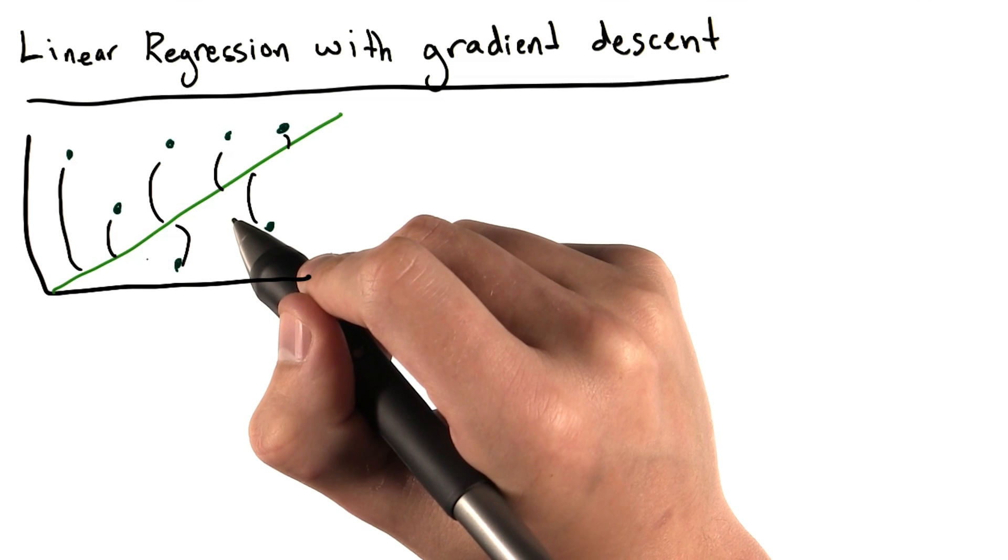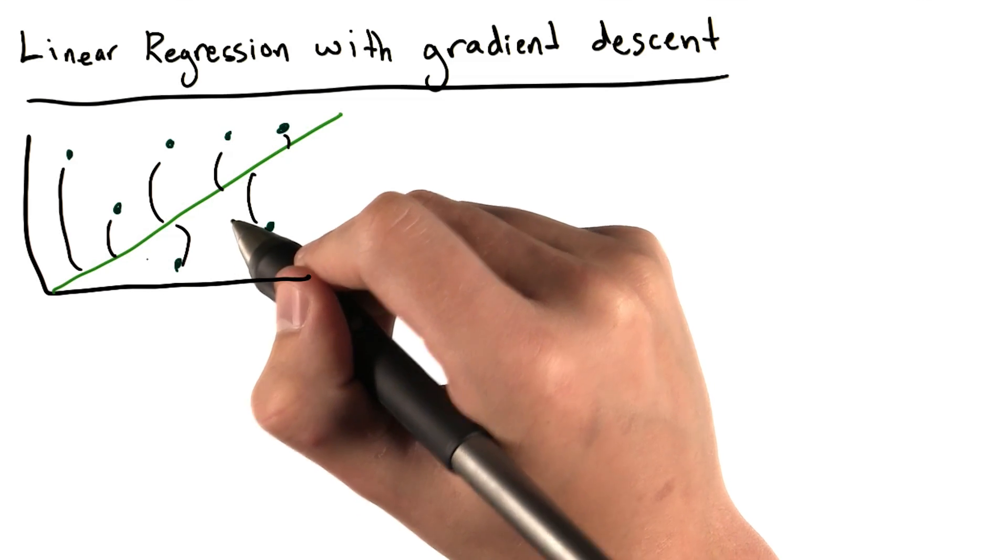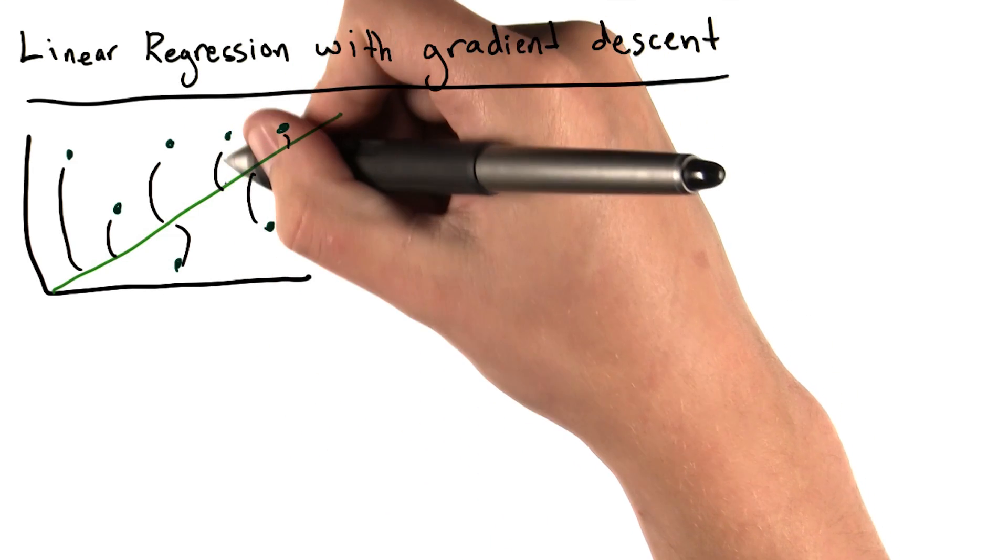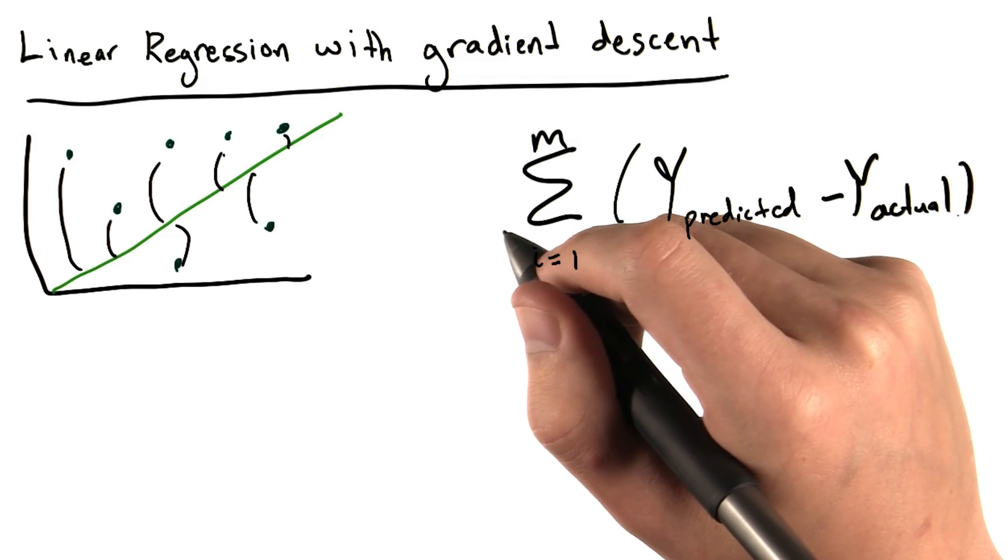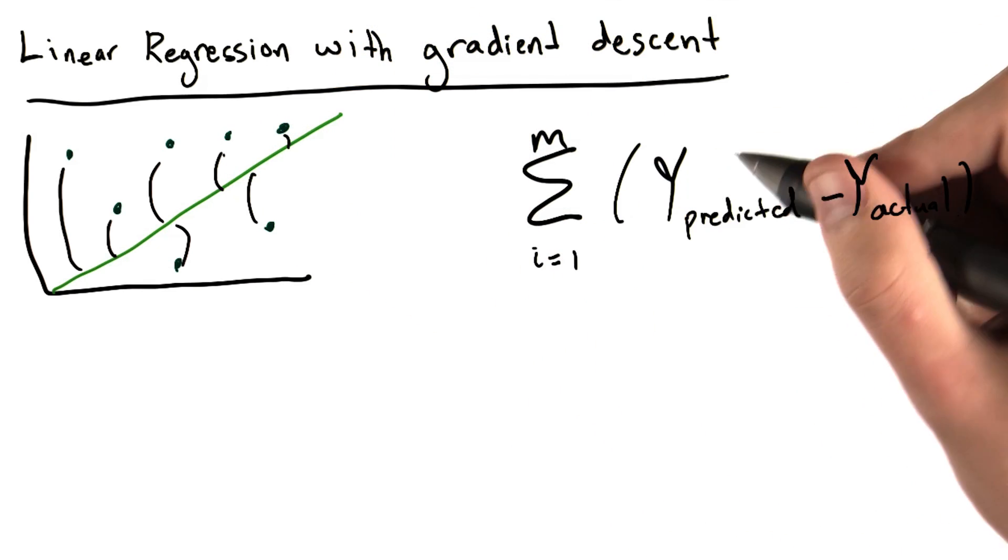What we need to do is find the thetas that produce the best predictions, that is, making these differences as small as possible. If we wanted to create a value that describes the total errors of our model, we'd probably sum up the errors.